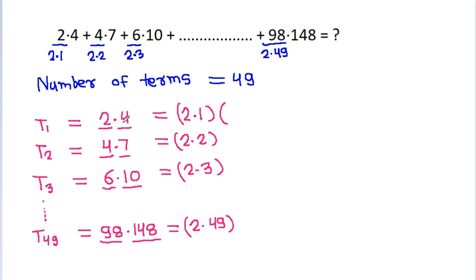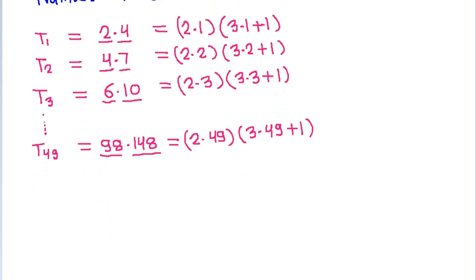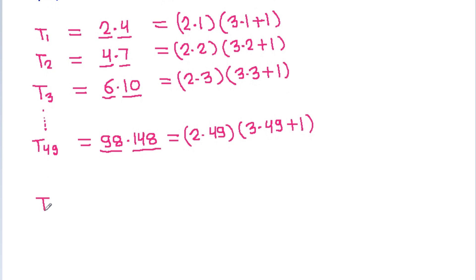4 can be written as 3 times 1 plus 1. 7 can be written as 3 times 2 plus 1. And 10 is 3 times 3 plus 1. And 148 will be 3 times 49 plus 1.